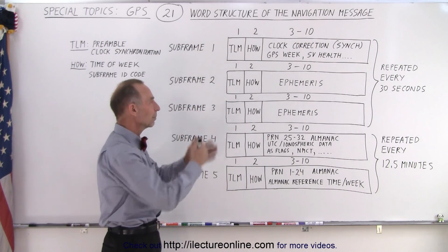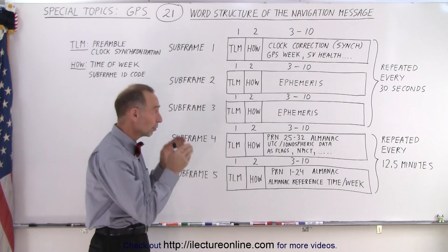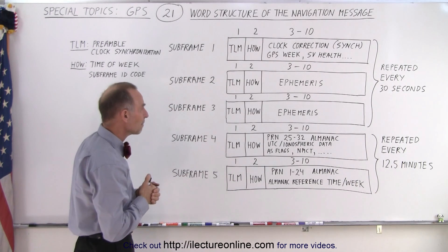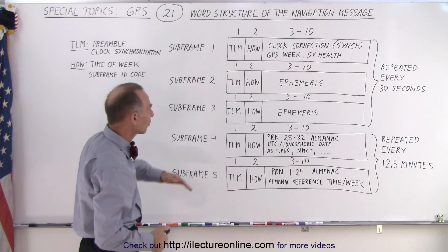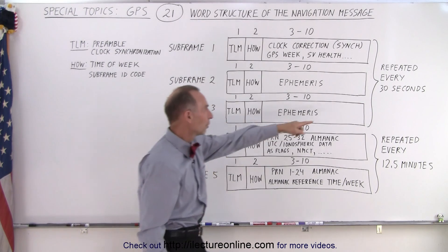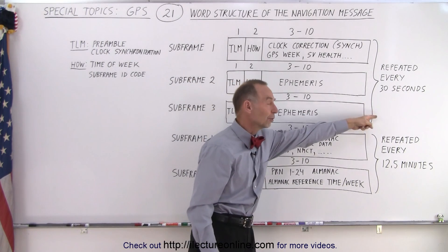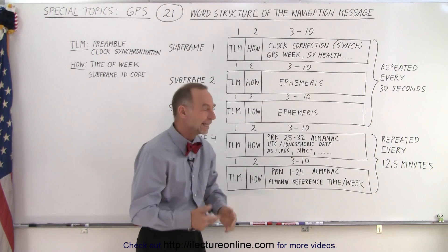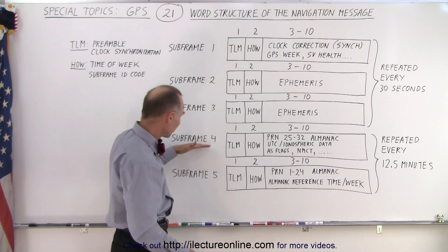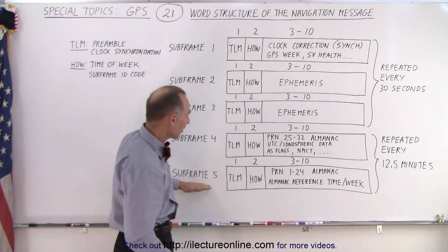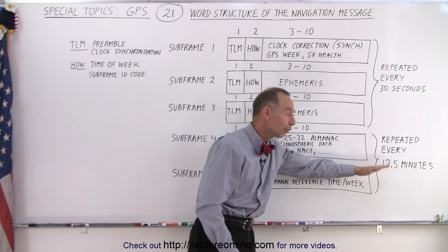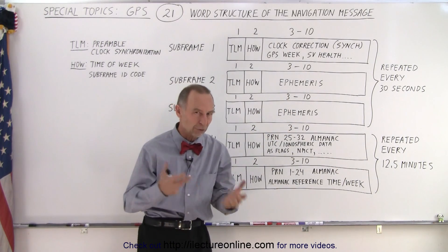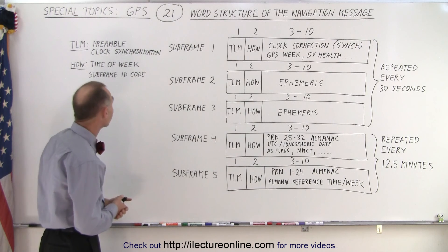After the initial acquisition, we need to take more accurate ephemeris data to zero in exactly on where the satellite should be. Notice that the first three sub-frames are repeated every 30 seconds for one to two hours, depending upon how quickly it ages out. Sub-frames four and five are repeated every 12.5 minutes for an entire 24 hours before being replaced by a new set.